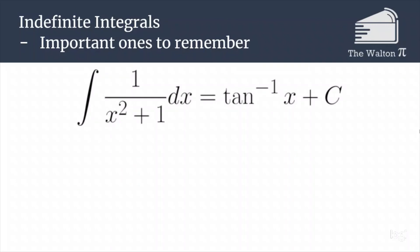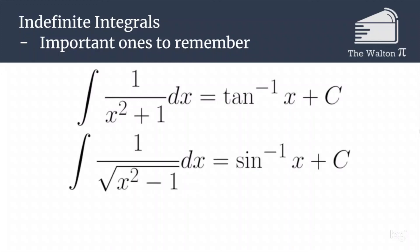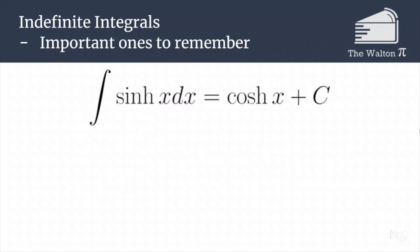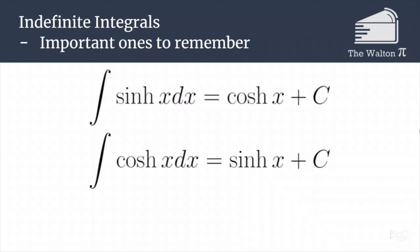We also have a couple of inverse trig functions useful to remember, though if you can't recall them, you can derive them using trig substitution, which I have a video covering coming out soon. The integral of 1 over x squared plus 1 is inverse tangent. The integral of 1 over the square root of 1 minus x squared is inverse sine. The integral of hyperbolic sine (sinh) is hyperbolic cosine (cosh), and the integral of hyperbolic cosine (cosh) is hyperbolic sine (sinh).